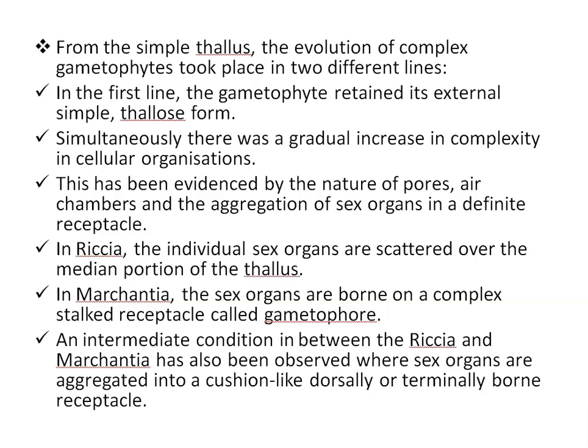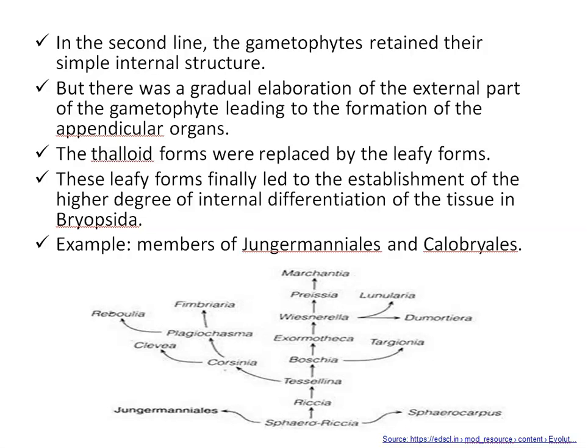These receptacles are borne on the thallus dorsally or terminally. In the second line, the gametophyte retained their simple internal structure, meaning lack of air pores and air chambers. But there was a gradual elaboration of the external part of the gametophyte, leading to the formation of appendicular organs. The thalloid forms were replaced by the leafy forms, and these leafy forms finally led to the establishment of a higher degree of internal differentiation of tissue, as observed in the members of Jungermanniales and Calubra eels.